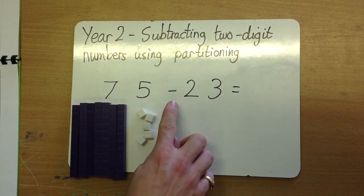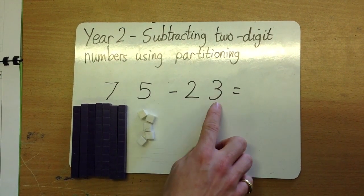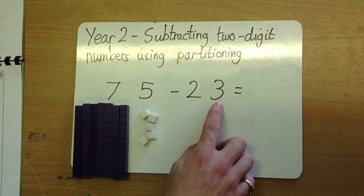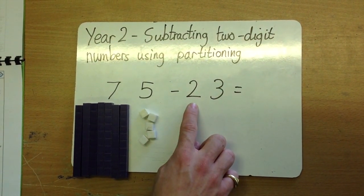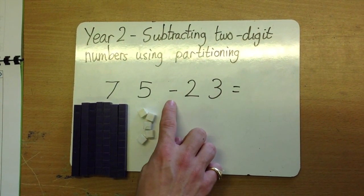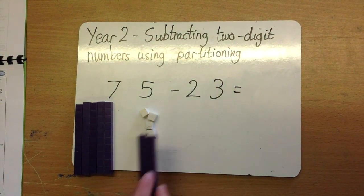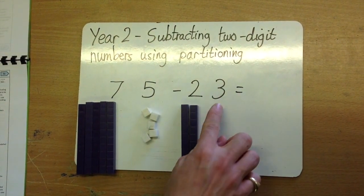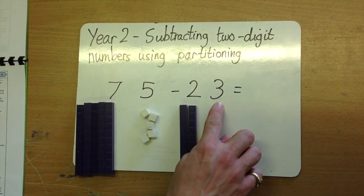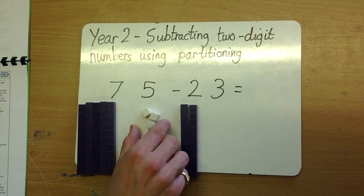We're subtracting 23. In 23, there are 2 tens, so subtract 2 of the tens. Then, there are 3 units — subtract 3 of the units.